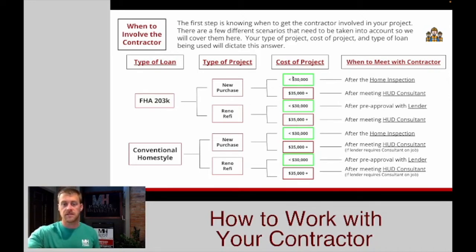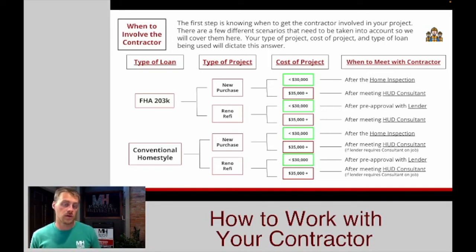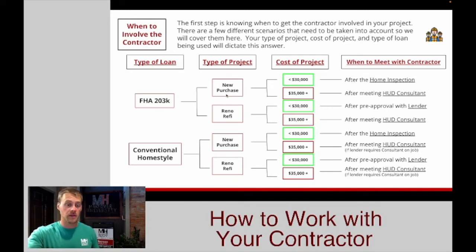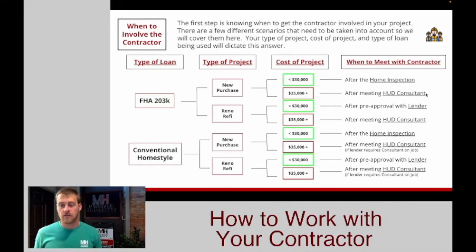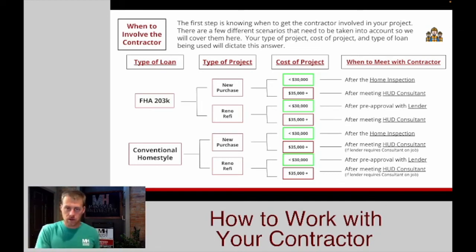On the FHA side, the cost of the project plays a very, very big role. On the conventional side, the cost of the project isn't quite as important, but it's dependent on the lender you're using — they all handle the conventional homestyle loan a little differently. So if we are doing an FHA 203k, purchasing a new house — which is probably the most common scenario we run into — and you're going to be spending at least $35,000 or more, then the contractor is going to need to show up after meeting with the HUD consultant. So you found the house, got it under contract, already met with the home inspector, and met with the HUD consultant — now the contractor comes into the game.